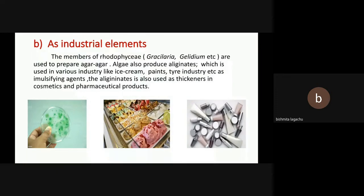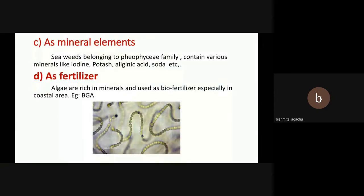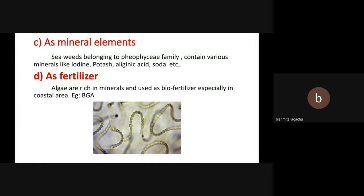Next point: as mineral elements. As we discussed before, seaweeds belonging to Phaeophyceae family, that is brown algae, contain various minerals like iodine, potash, alginic acid, soda, etc. For this we use algae as food for humans and for cattle also.